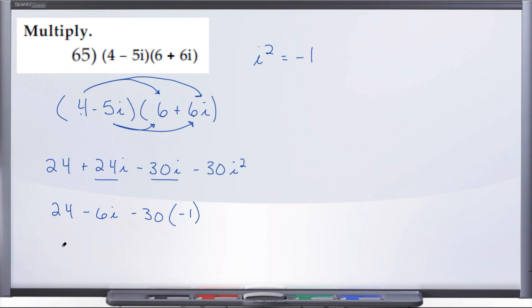So, let's go ahead and rewrite our expression here and see what happens. So, 24 minus 6i. Now, we have negative 30 times negative 1, which is positive 30.